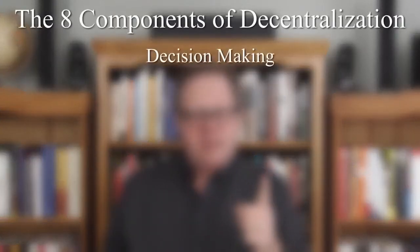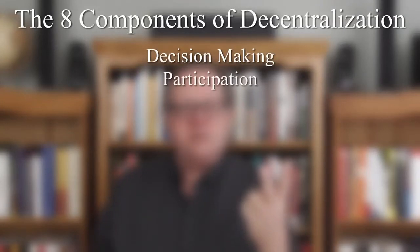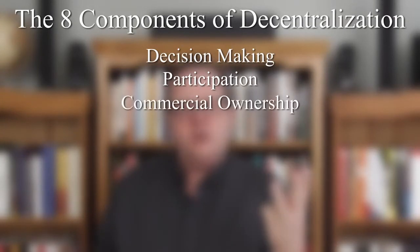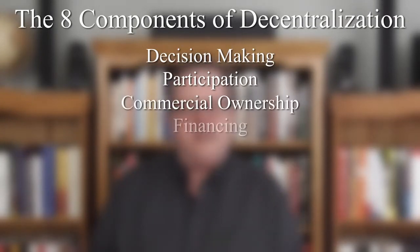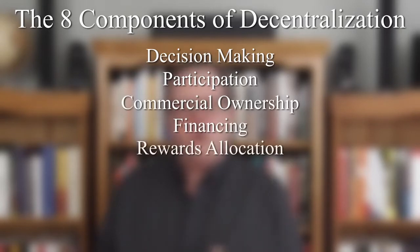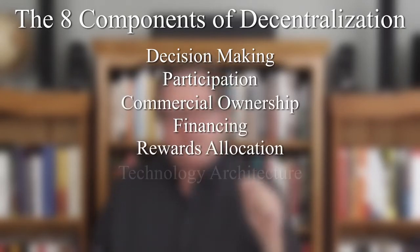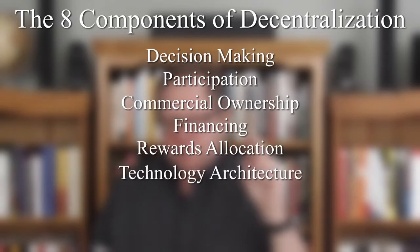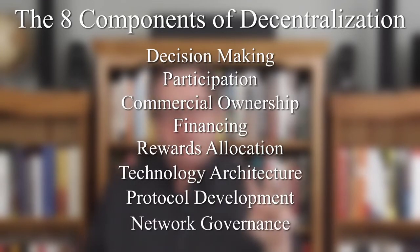There are eight different components of decentralization: decision making, participation, commercial ownership, financing, rewards allocation, technology architecture, protocol development, and network governance. All of those are parts of what we call decentralization — the most complex and the most important part of deploying blockchain.